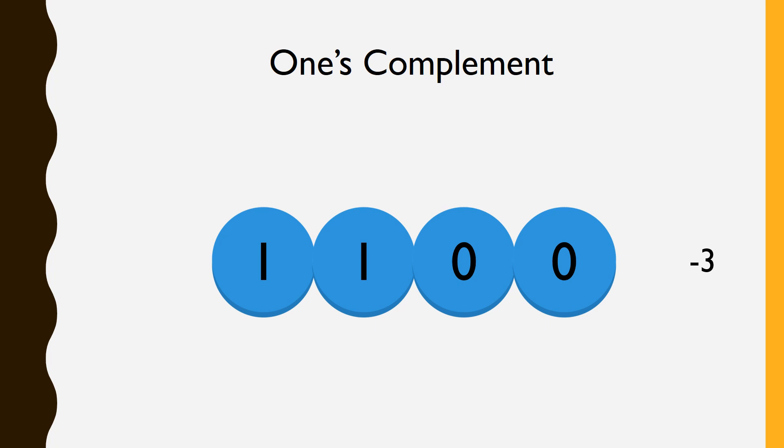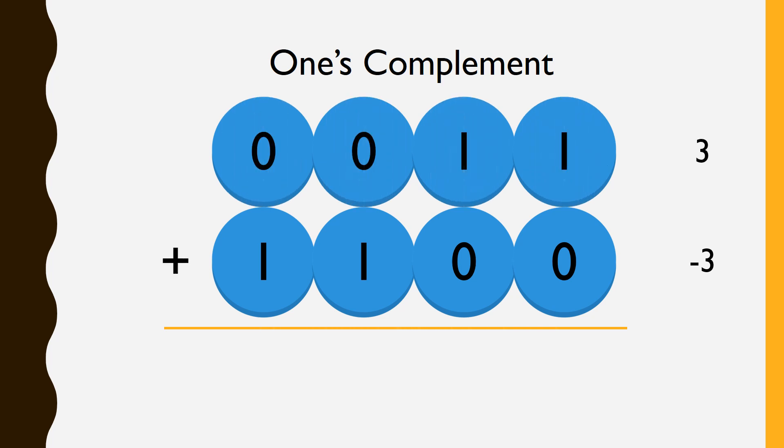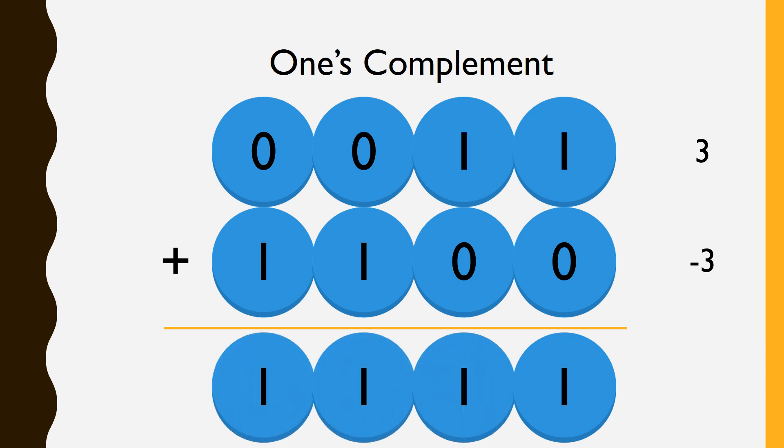Now, subtraction is a whole lot easier. Adding negative 3 to 3, we get 1 plus 0 is 1, 1 plus 0 is 1, 0 plus 1 is 1, and 0 plus 1 is 1.